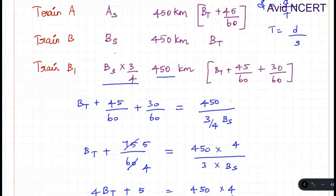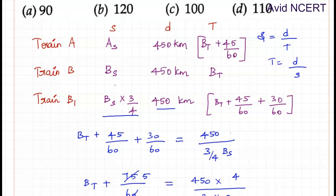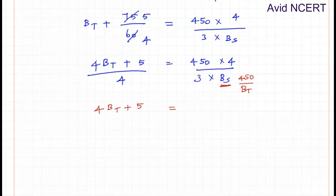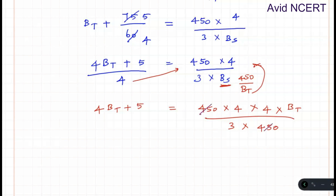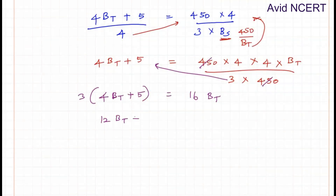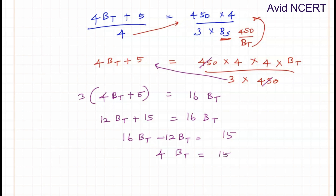Substituting the value of BS from the second set of data: BS equals 450 divided by BT. Substituting into the equation and bringing everything to a common term, 4BT plus 5 equals 450 times 4 times 4 times BT divided by 3 times 450. The 450s cancel, giving 4BT plus 5 equals 16BT divided by 3. Cross-multiplying: 12BT plus 15 equals 16BT, so 4BT equals 15, therefore BT equals 15 by 4 hours.